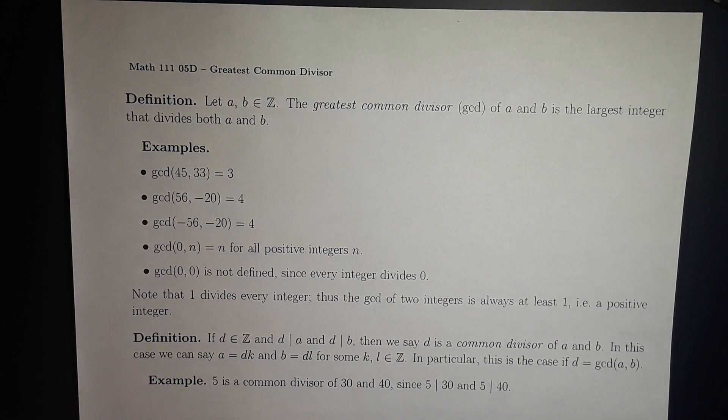The GCD of 0 and 0 is not defined, since every integer divides 0, so there is no greatest integer that divides 0.